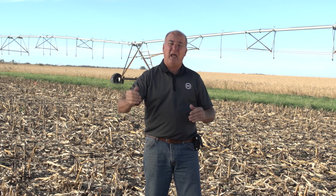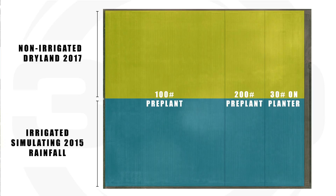For this plot, we set it up in 10 blocks and wanted to check the things that you and I do for years. We had a once-and-done pass where we put 200 pounds on all before planting. The rest of the plot had 30 units on with the planter in a strip bandit, and then we came back and put on different amounts.